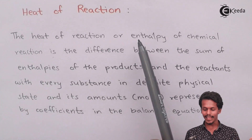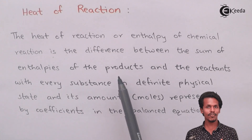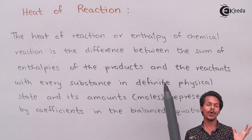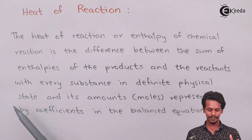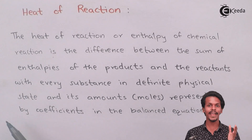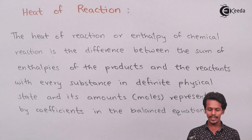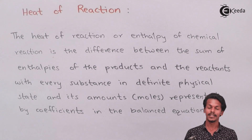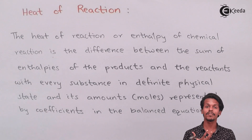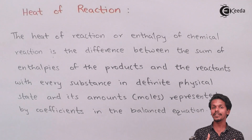The heat of reaction or enthalpy of a chemical reaction is the difference between the sum of all the enthalpies of the products and the sum of all the enthalpies of the reactants, with every substance in a definite physical state and its amount represented by the coefficients in a balanced equation. Whatever value we get is the amount of enthalpy that has changed during the process.